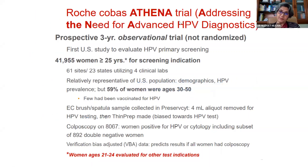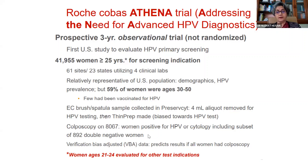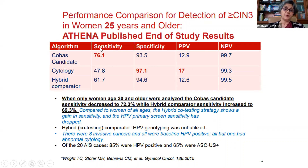This change in guidelines came about through the Athena study, done basically by the Roche-Cobas group, addressing the need for advanced HPV diagnostics. About 41,000 to 42,000 women over 45 years of age were tested, some of them vaccinated. There was colposcopic follow-up on around 9,000 women with positive HPV cytology, including women who were double negative. The sensitivity and specificity values showed a much better sensitivity with HPV testing.